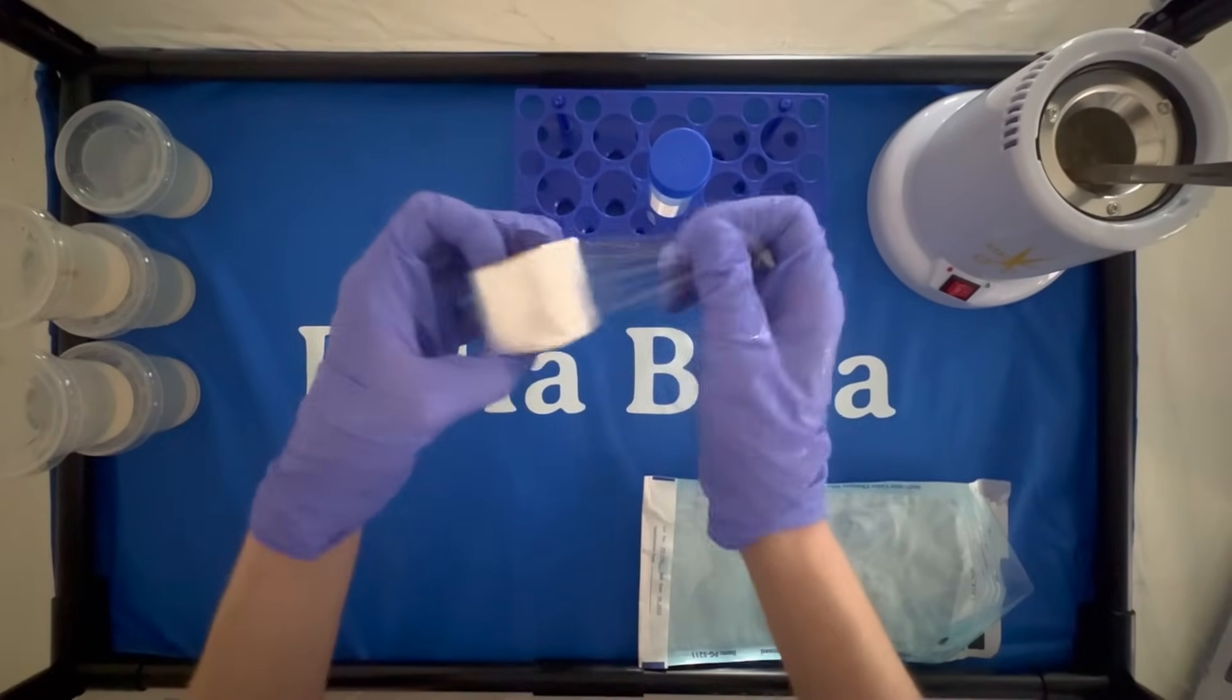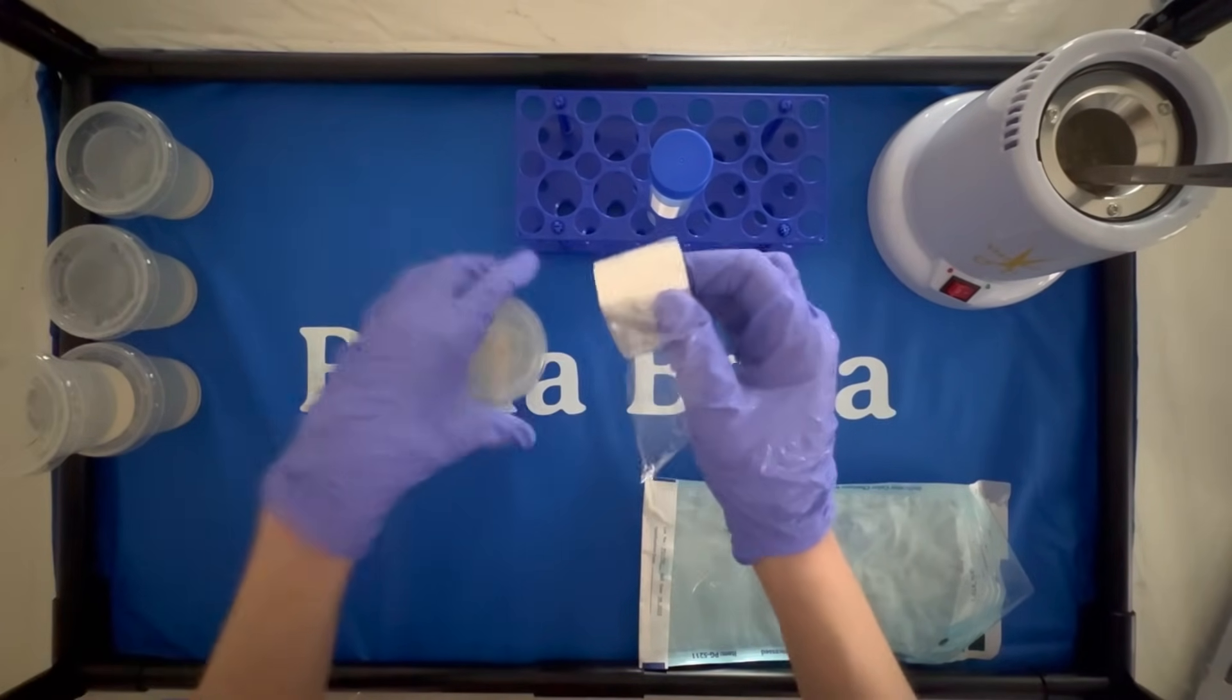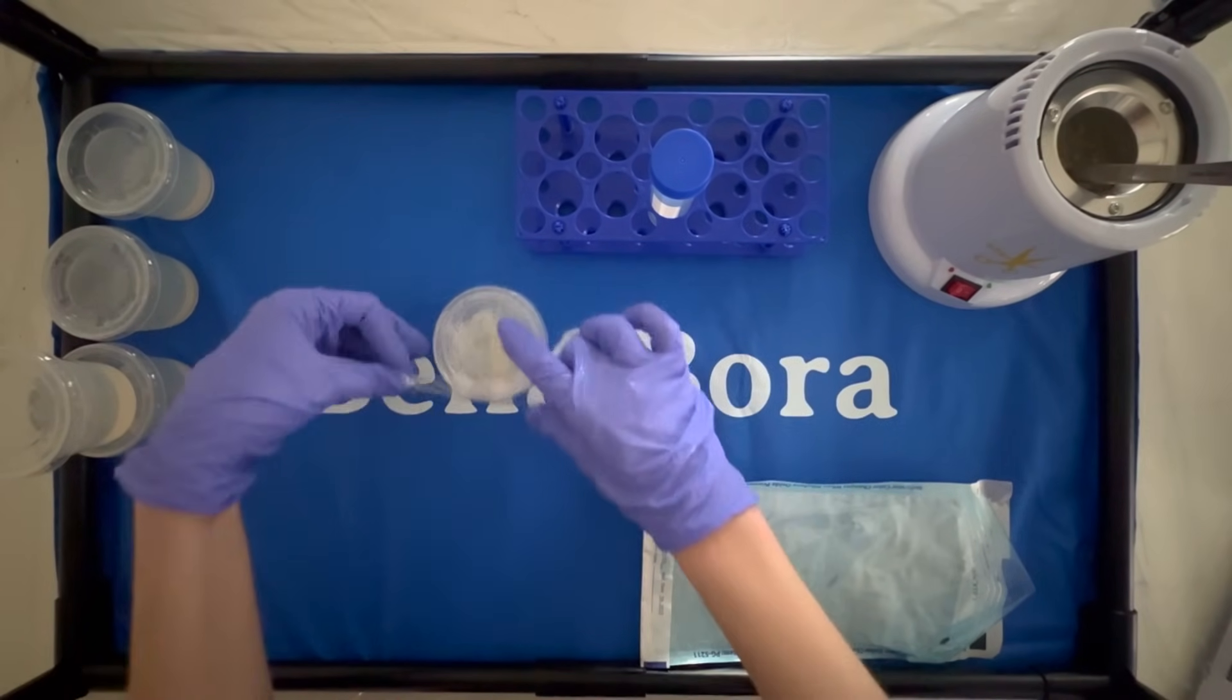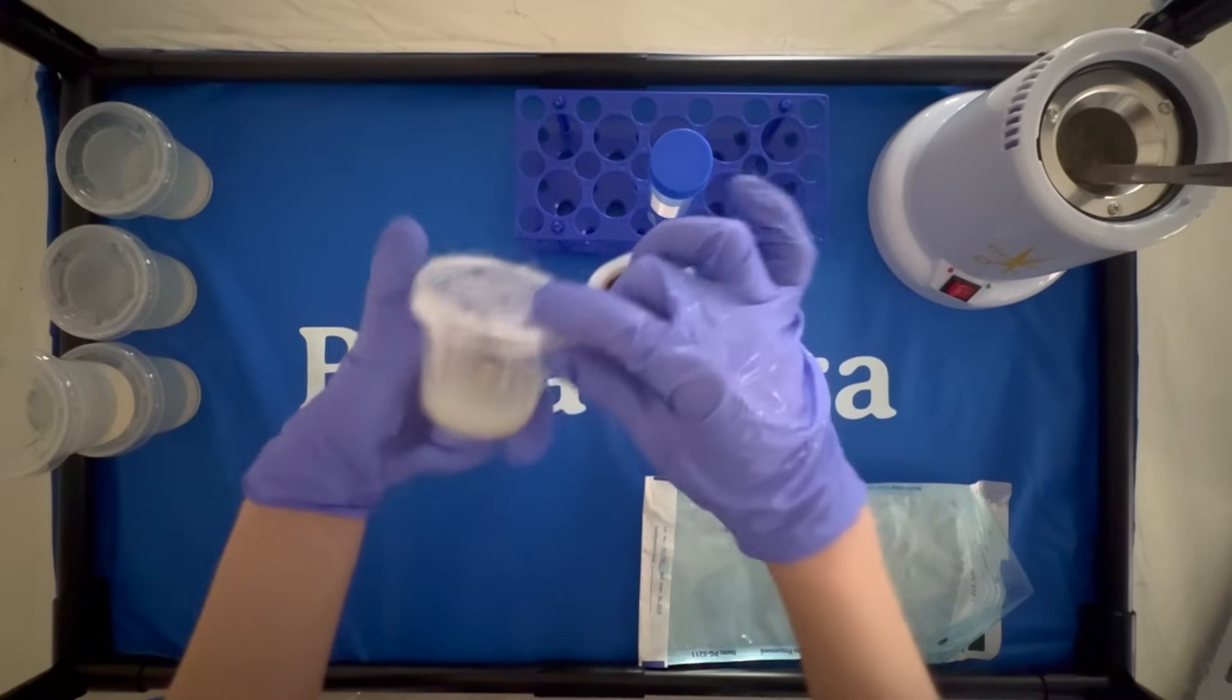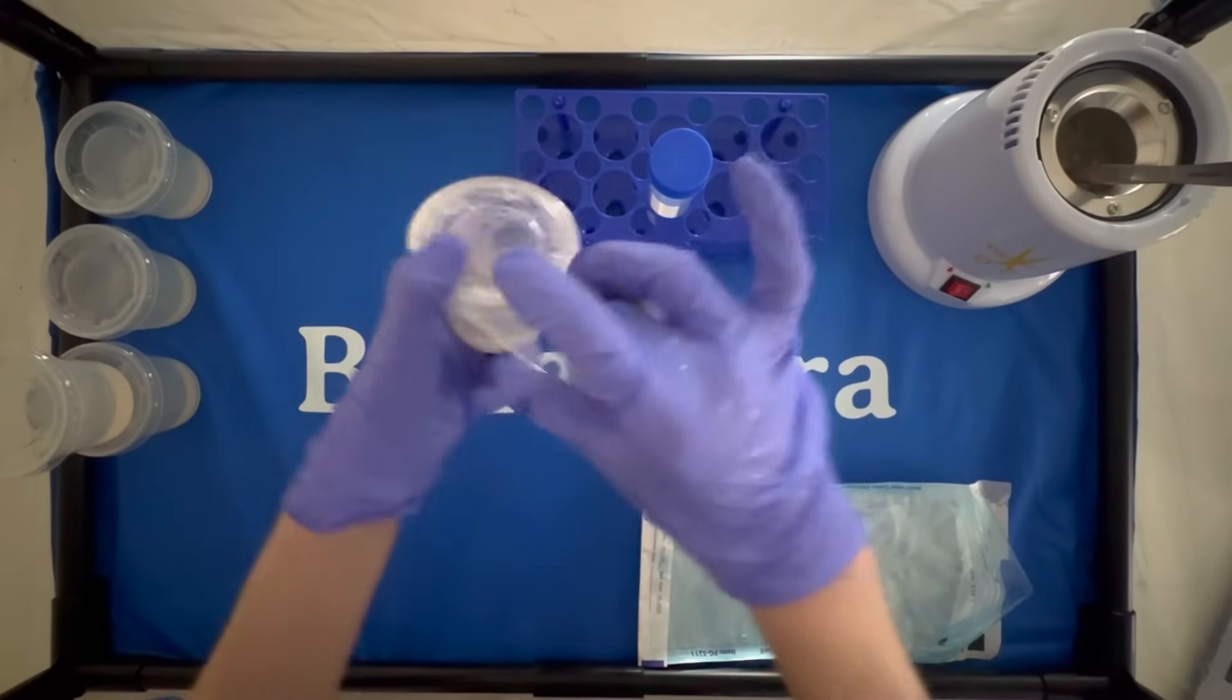Afterwards, I wrap the containers in plastic wrap to help prevent contamination when we take them out of the still air box. And I place the containers underneath some full spectrum grow lights and we're good to go.